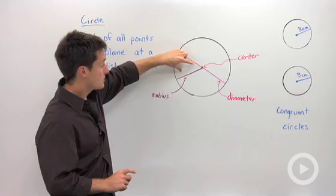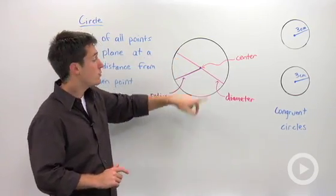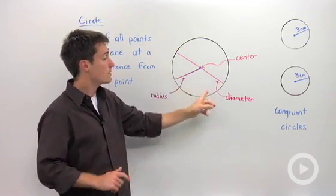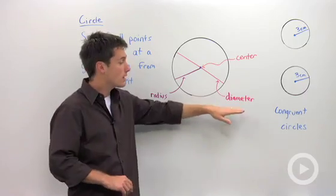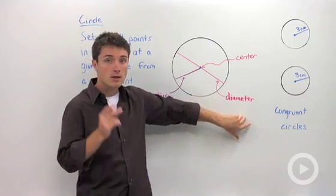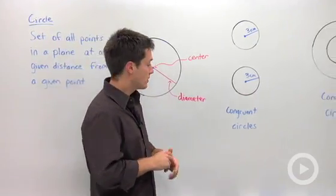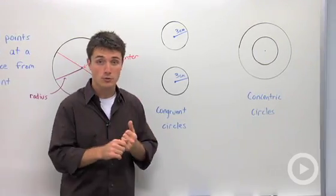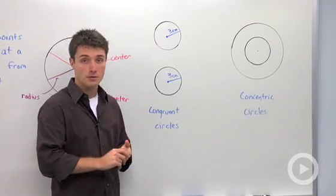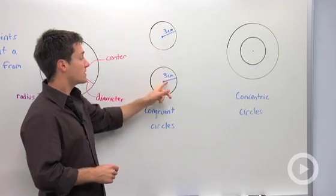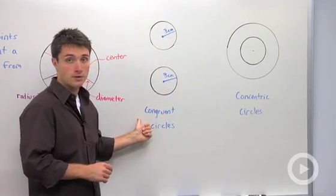And that given distance is your radius. If you have a chord or a segment that passes through the center, that is called a diameter. Now two commonly confused terms regarding circles are congruent circles and concentric circles. Circles whose radii have the same measure are congruent.